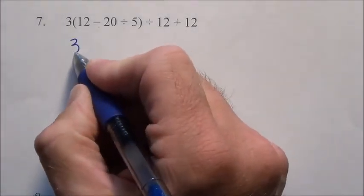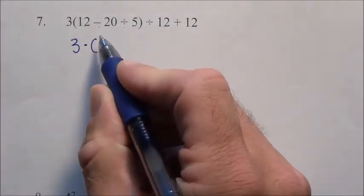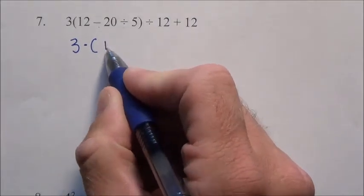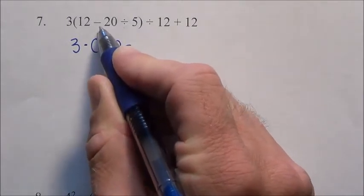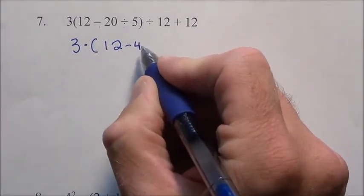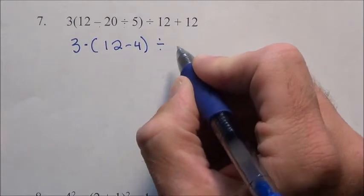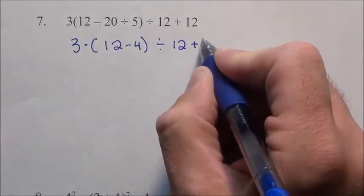So this is going to be 3 times, we have parentheses with 12 minus, and we're going to do that division right there because division is more powerful than subtraction. So we have 4 divided by 12 plus 12.